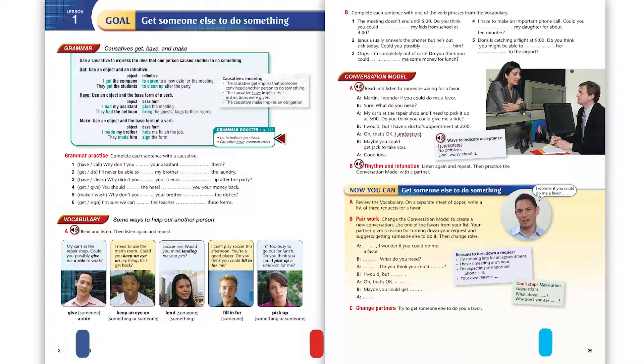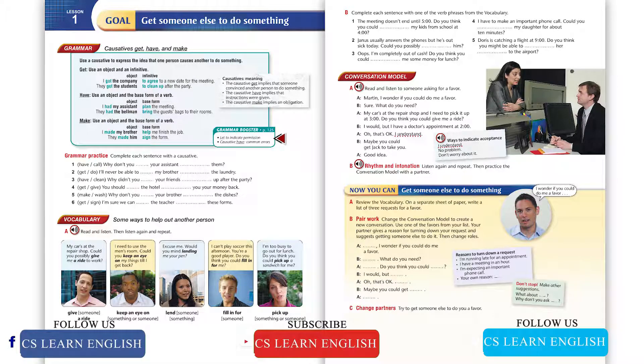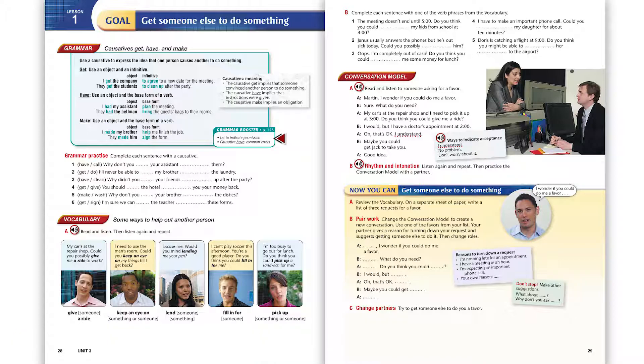Page 28, Vocabulary: Some ways to help out another person. Exercise A, read and listen. Give someone a ride. Keep an eye on something. Keep an eye on someone. Lend someone something. Fill in for someone. Pick up something. Pick up someone. Now listen again and repeat: Give someone a ride.